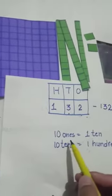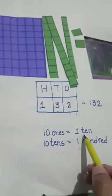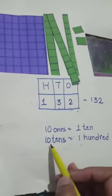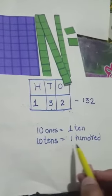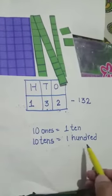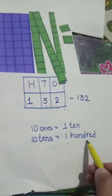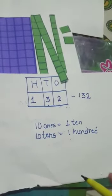To conclude: ten ones equals one ten, and ten tens equals one hundred. Okay, my dear students, thank you.